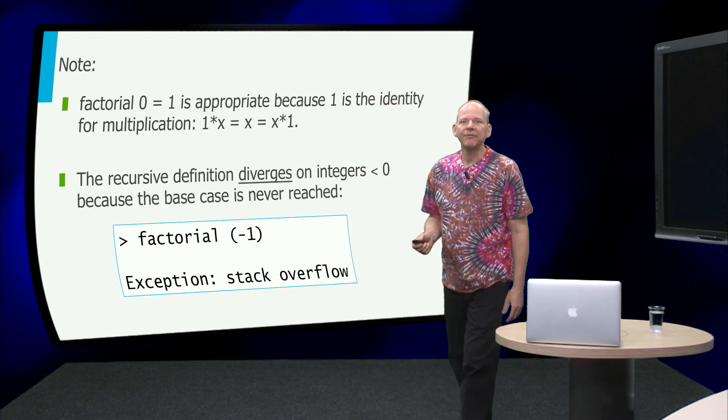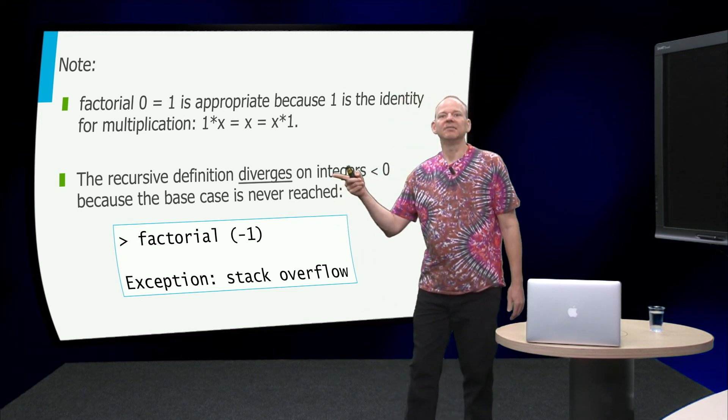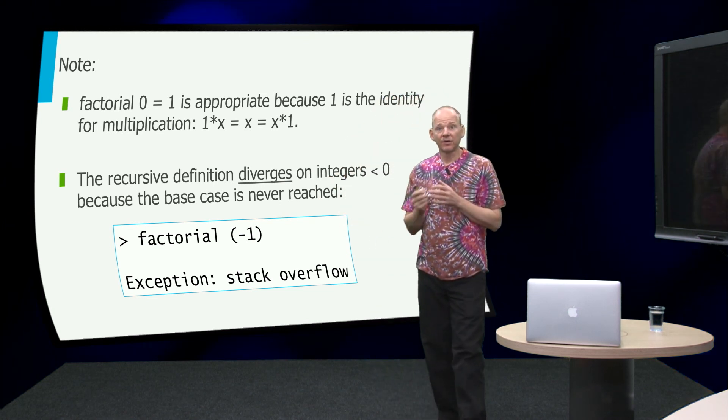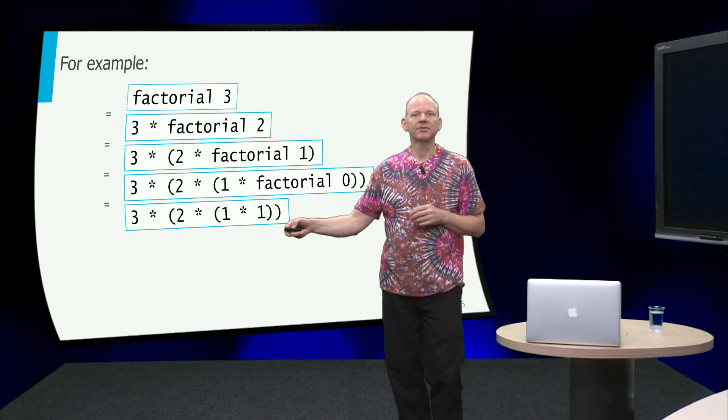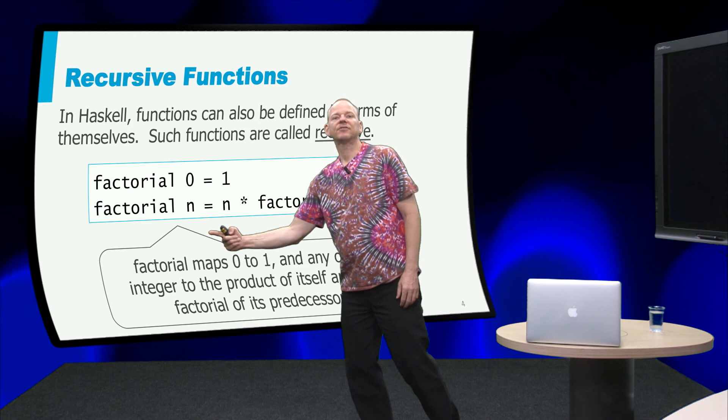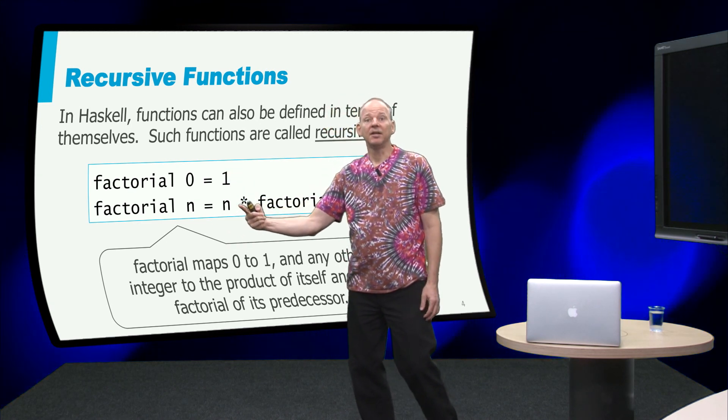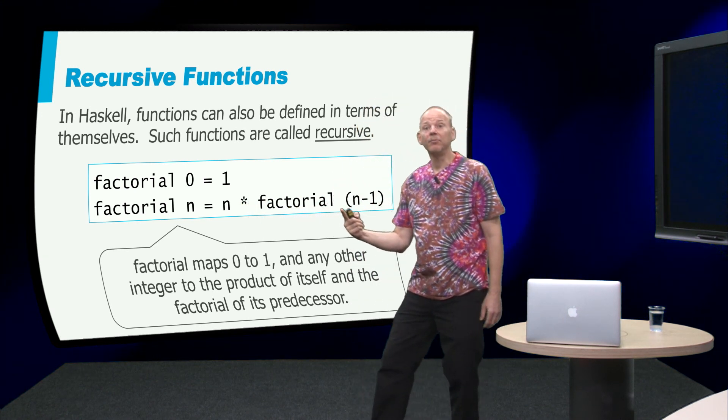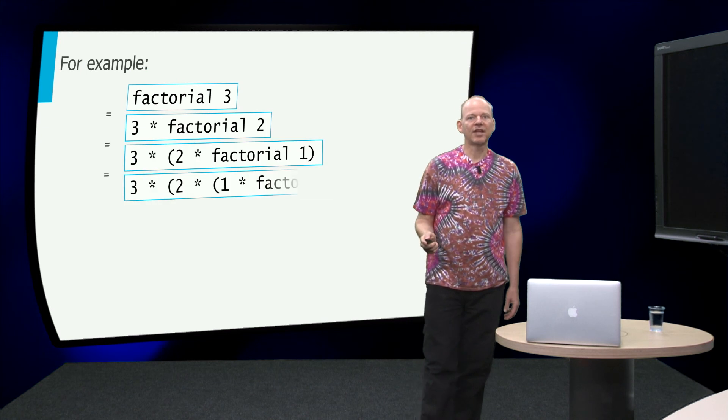The recursive definition that we have given of course will not terminate or a fancy way to say that is it will diverge for numbers less than 0. If we look here, let's go back a few slides. If n is less than 0, then this case doesn't apply. So we multiply n with the factorial of n minus 1, which is even more less than 0 and so on and so on. So this will never terminate and it will cause a stack overflow.